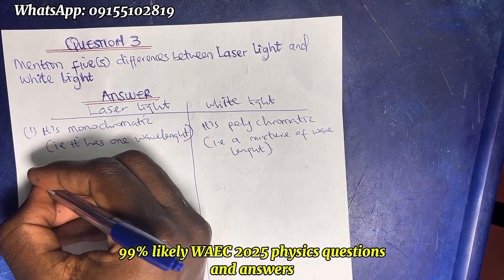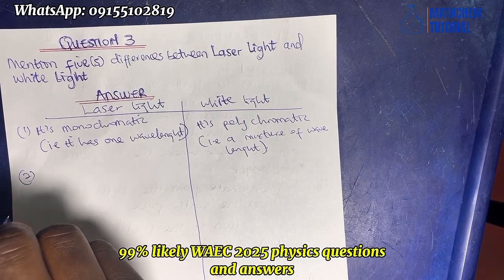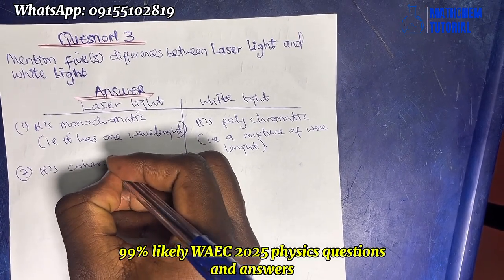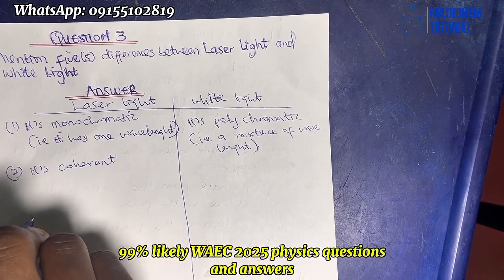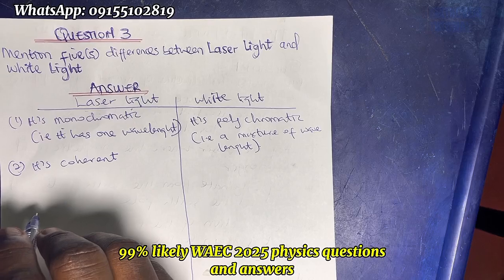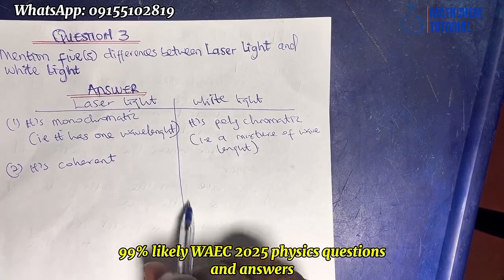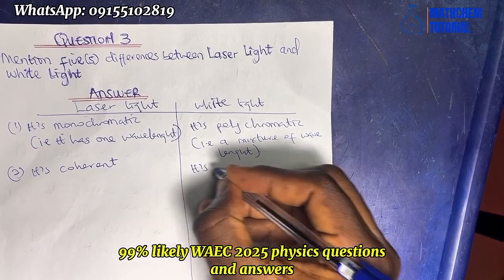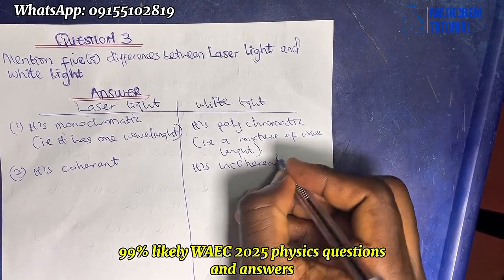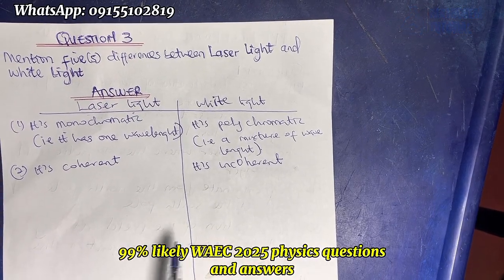Another difference: laser light is coherent, meaning the waves are in phase. White light is incoherent, meaning the waves are out of phase.